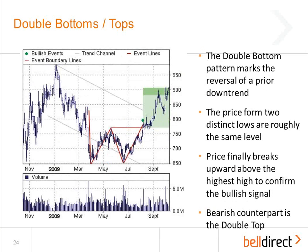A simpler version of the triple top or bottom is the double top or bottom. Again, we've come into this following a decline, with two successive lows and a new level of resistance. Breaking through the top of that neckline indicates a bullish event, and oftentimes the stock will go on to rally. Again, double tops and bottoms are reversal events.